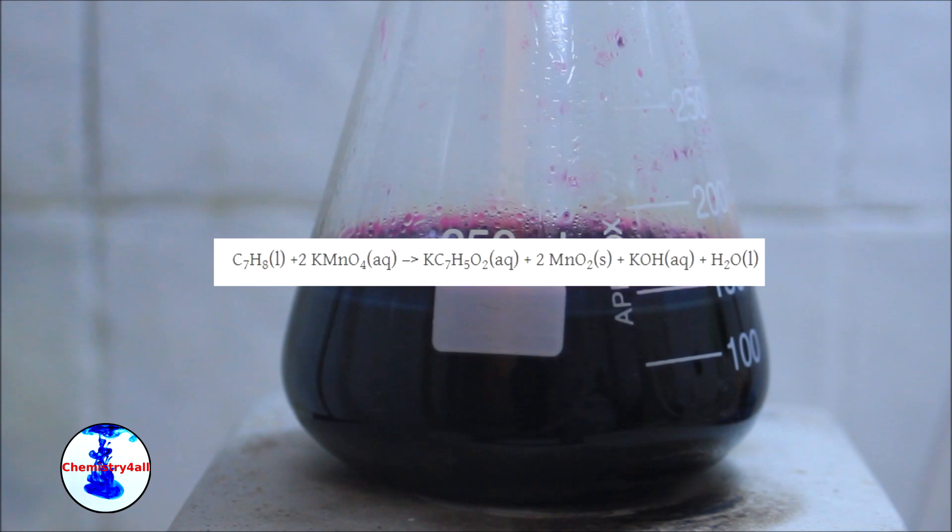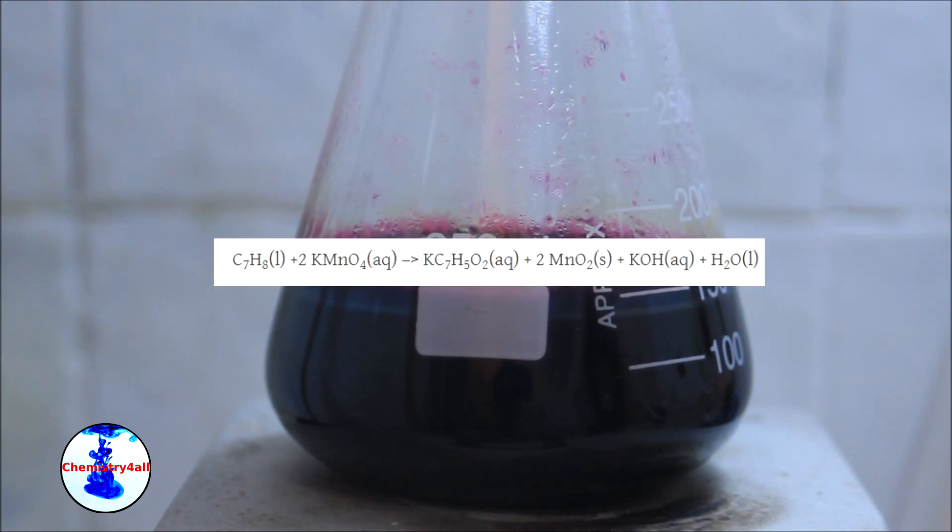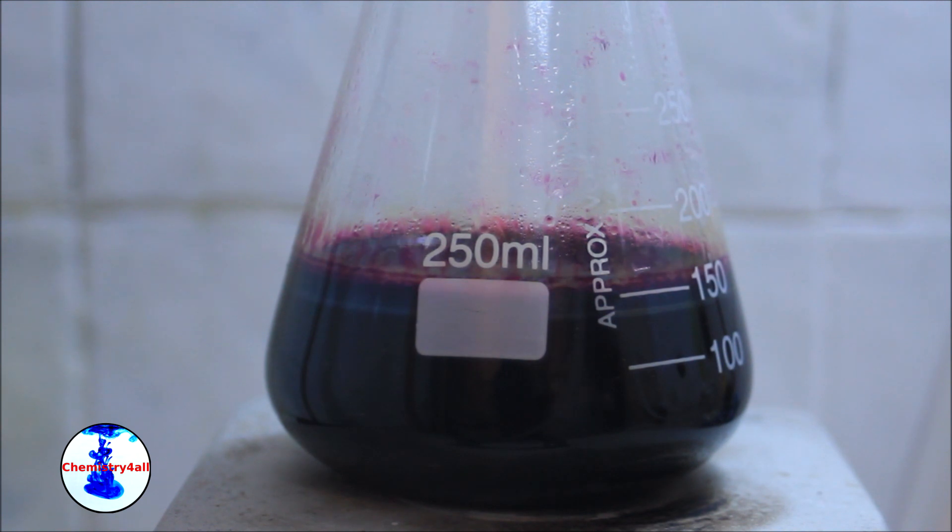The overall reaction taking place can be described by the following chemical equation. As you may have noticed, we have used an excess of toluene with respect to the stoichiometric ratio. This is done to avoid the presence of unreacted potassium permanganate as well as secondary reactions.